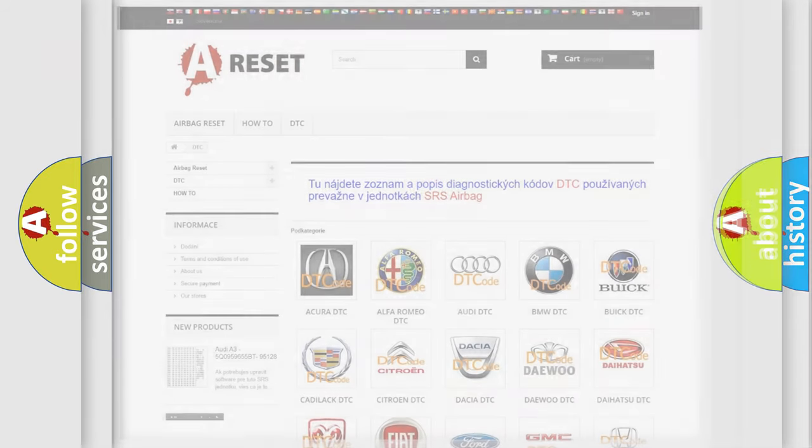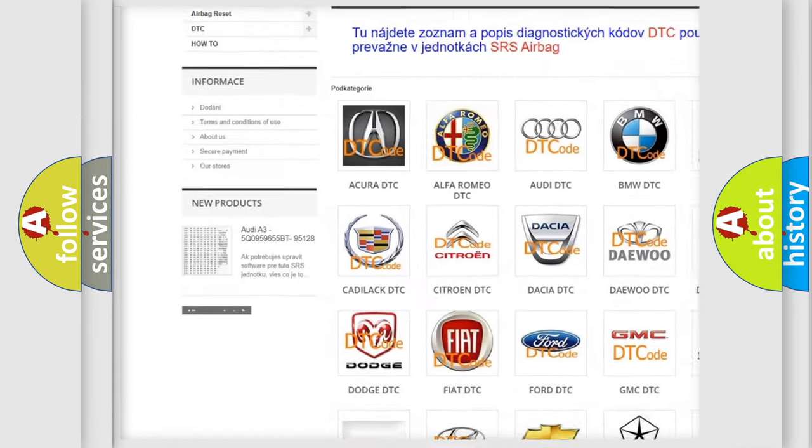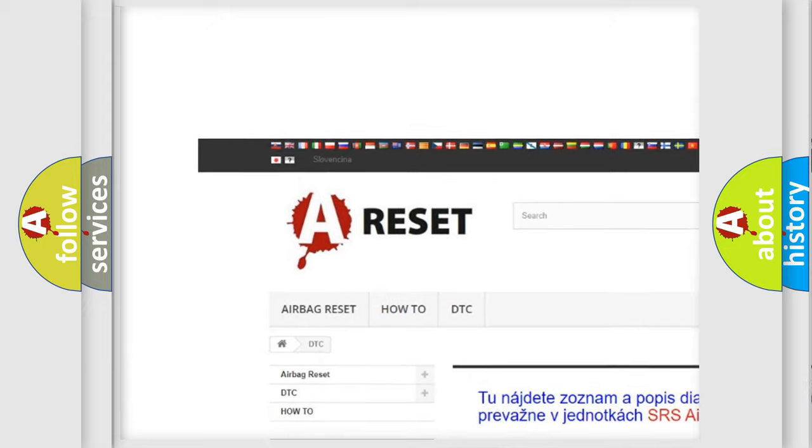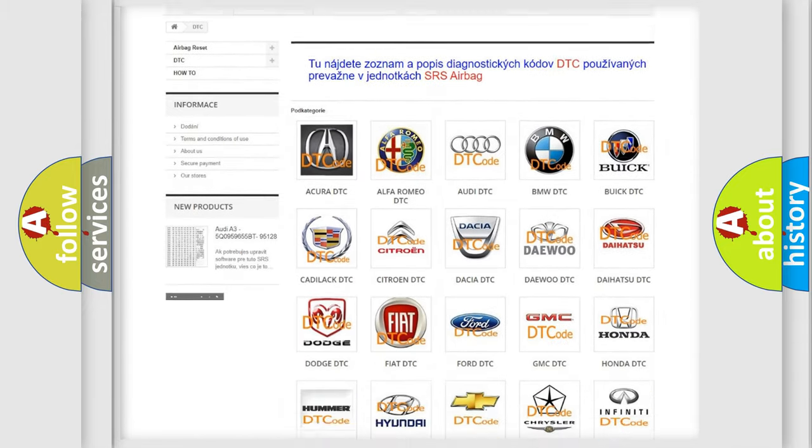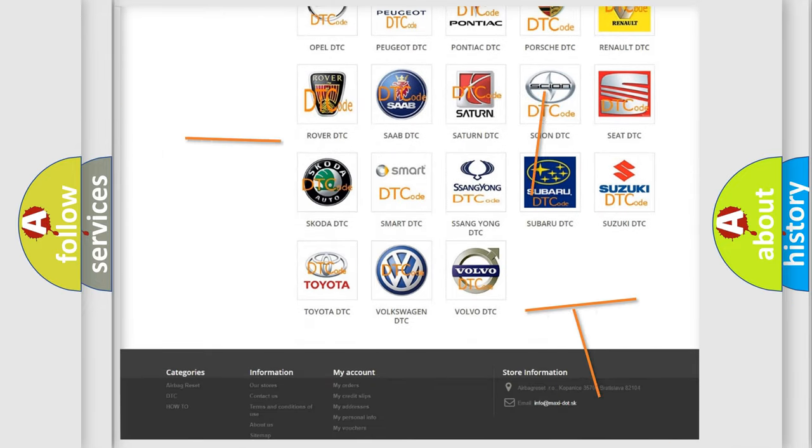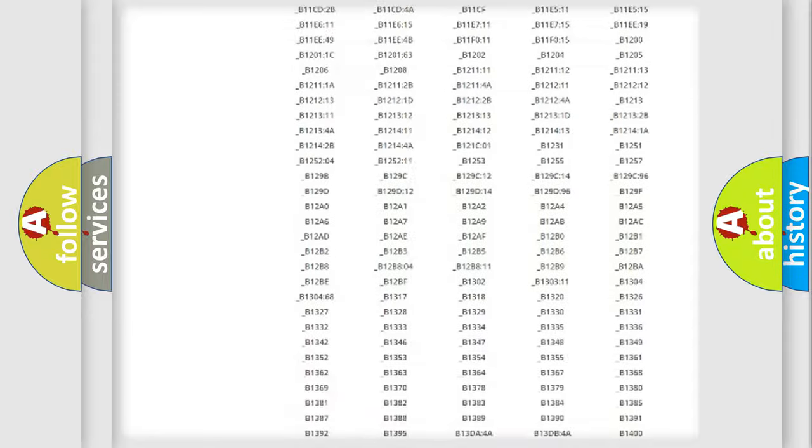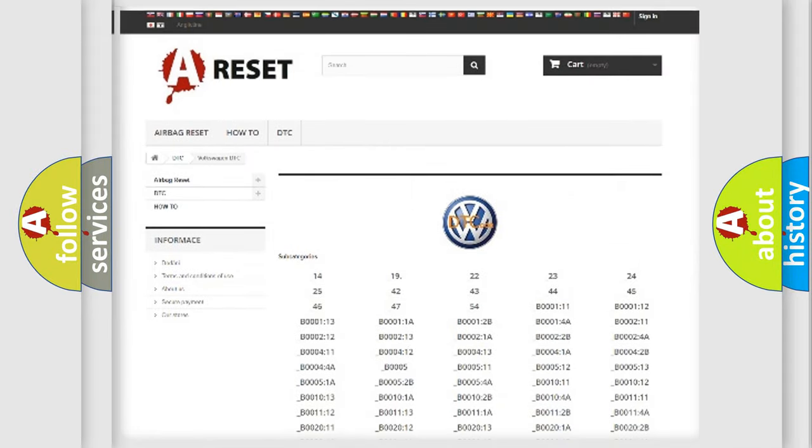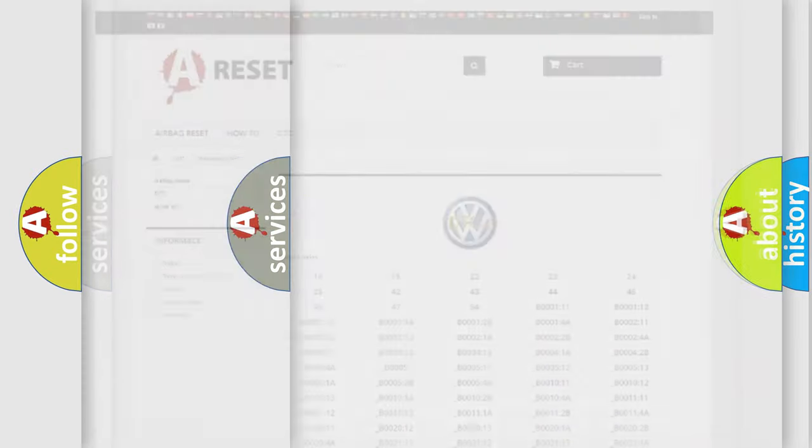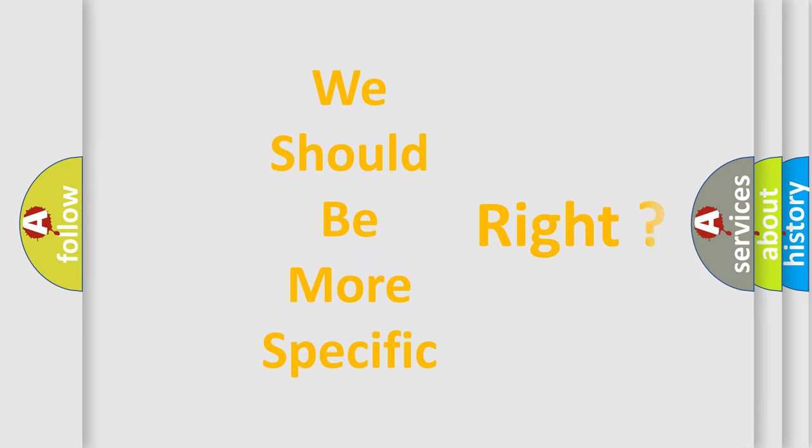Our website airbagreset.sk produces useful videos for you. You do not have to go through the OBD-II protocol anymore to know how to troubleshoot any car breakdown. You will find all the diagnostic codes that can be diagnosed in Volkswagen vehicles, and many other useful things. The following demonstration will help you look into the world of software for car control units.